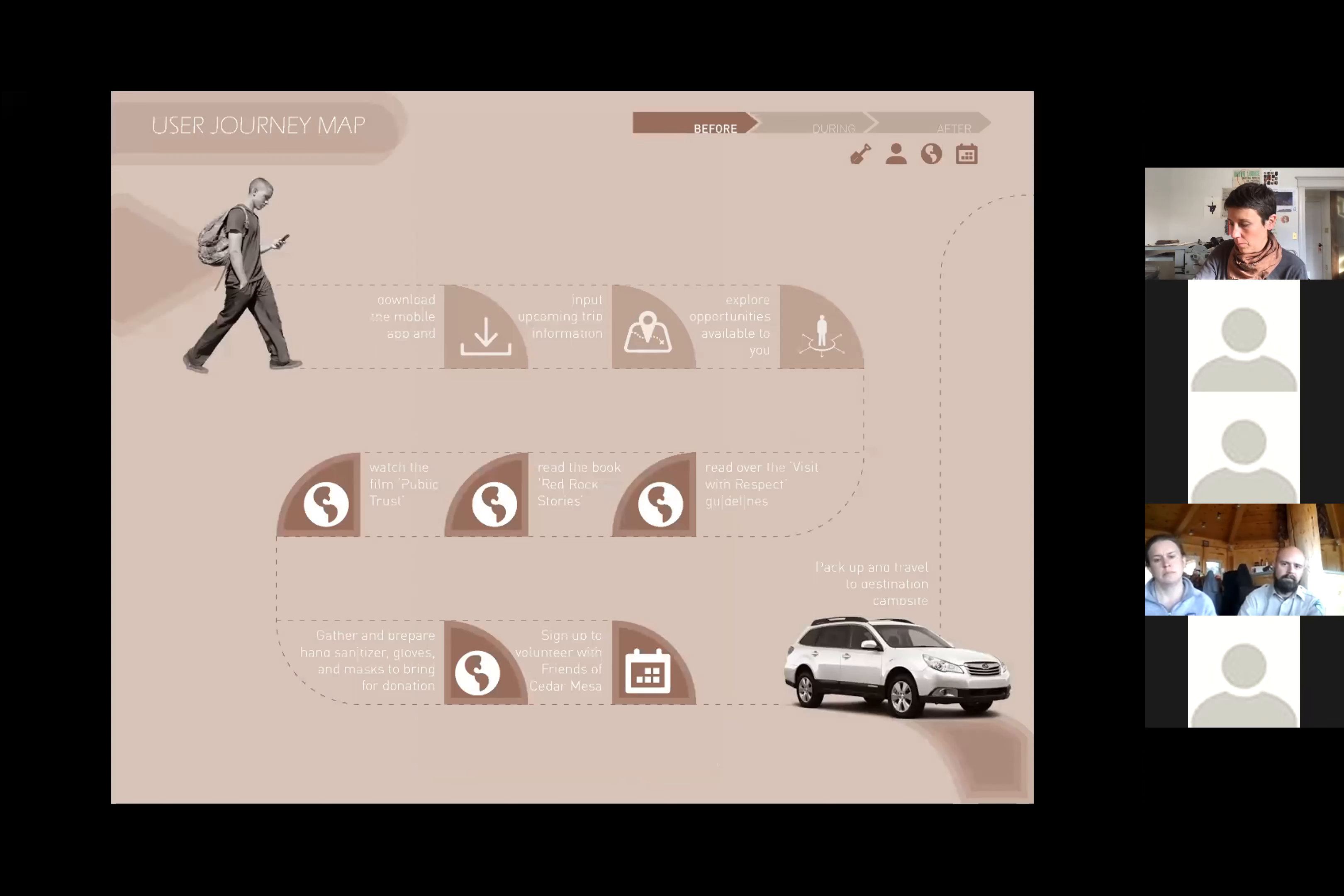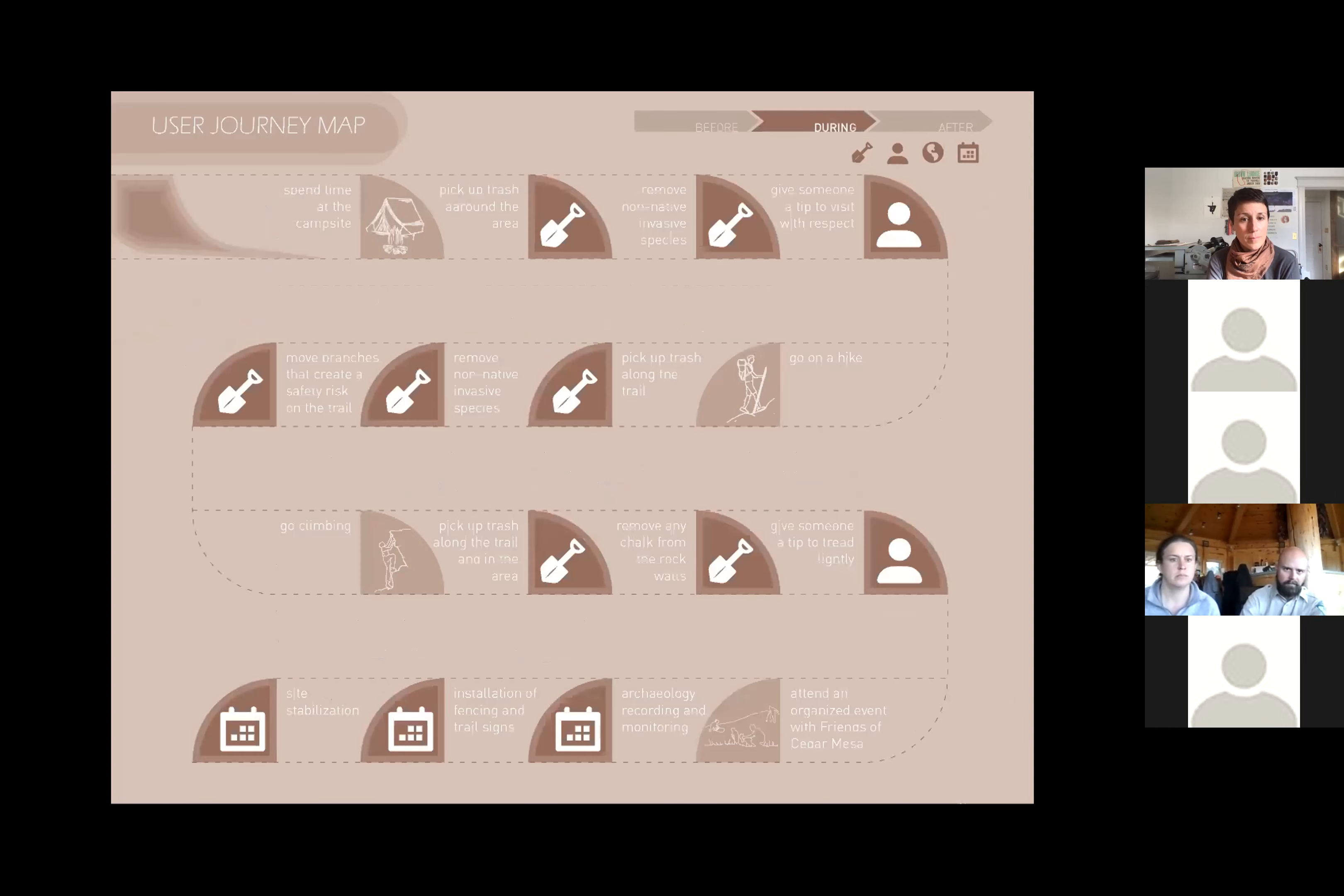This shows a journey map of one particular user of the app who is planning to visit the area. He first downloads the app and signs up, then inputs his trip information. He begins exploring the app, as well as all the opportunities that are available to him. He first starts working on some remote tasks that he can complete before he visits, including reading the visit with respect guidelines, reading a book about the history of Bears Ears, and watching a documentary. He also sees an opportunity to donate some needed supplies in the area, so he collects them to bring with him and also signs up for an event with Friends of Cedar Mesa. Once he's made it to the campsite, he sets up and completes a few tasks while spending time around the area. First, he picks up some trash he finds nearby, then weeds some non-native invasive species, and also gives a visit with respect tip to a fellow camper he runs into.